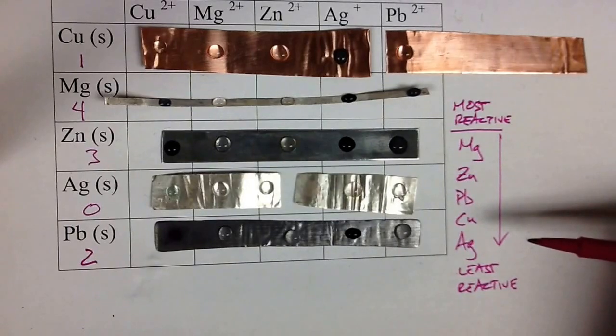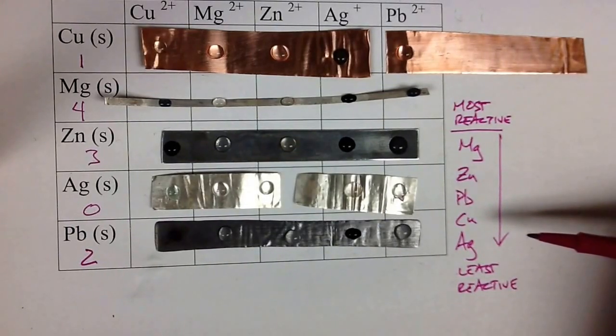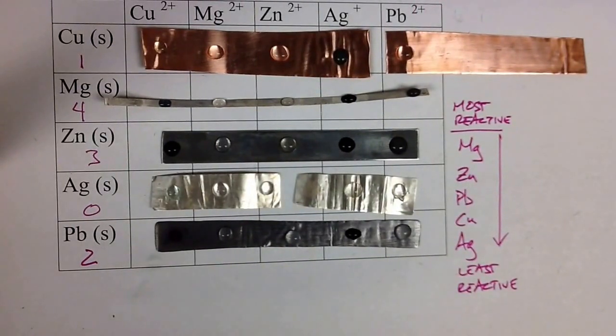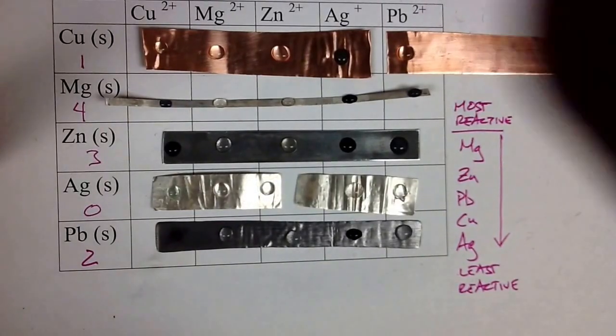That's about it for the lab. Again, what we've created here is called a metal activity series. And we can use this to be able to predict whether a reaction may happen or it may not happen. Thanks for watching.